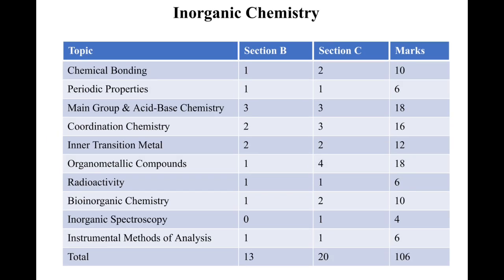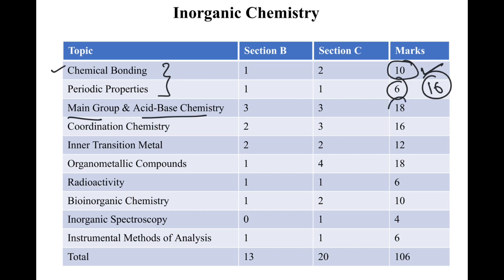Now for inorganic chemistry: chemical bonding, a basic topic, gave 10 marks with many good questions. Bonding and periodicity together give 16 marks. Main group elements and acid-base chemistry gave 18 marks, which is less than usual. Coordination chemistry gave only 16 marks this time — we normally expect more than 20. The marks have been distributed differently this time between chemical bonding, bio-inorganic, and other topics.